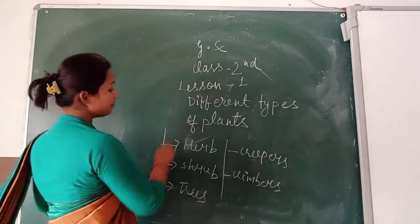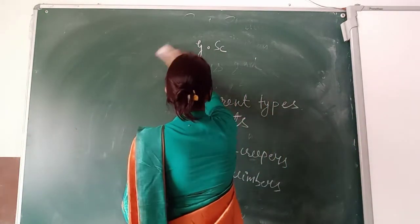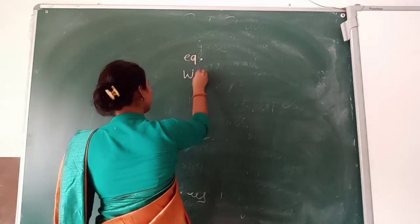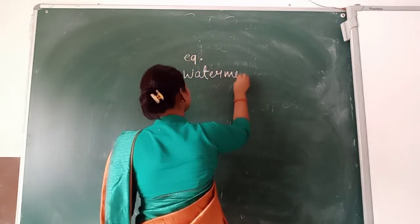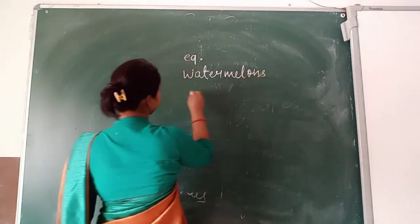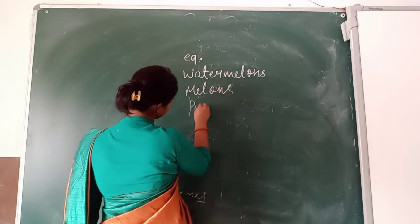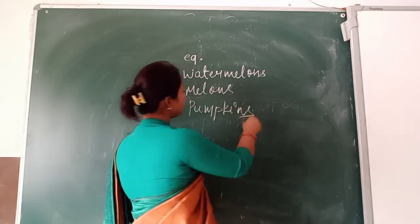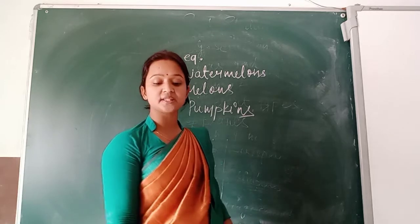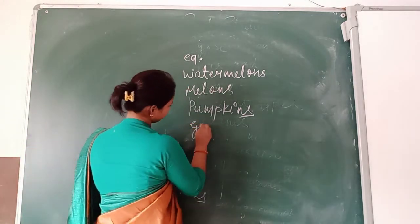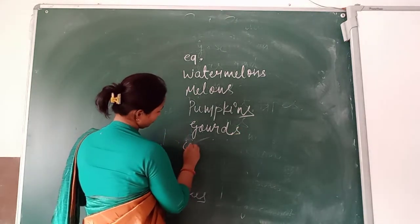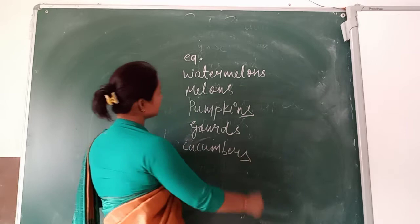So creepers grow creeping along the ground. Examples of creepers: watermelon, pumpkins, and melons. Gourds and cucumbers are also some examples of creeper plants.